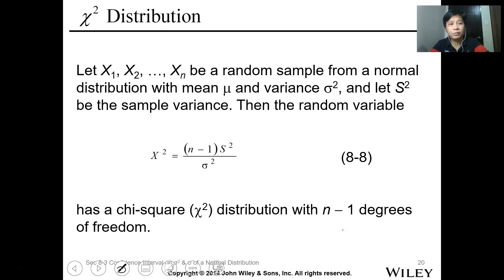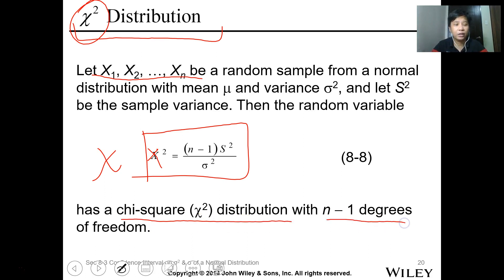Now the chi-square distribution. This could be utilized to estimate the variance or standard deviation of your population. Let x1 to xn be a random sample from a normal distribution with mean mu and variance sigma squared. Let s squared be the sample variance. Then the random variable, we can estimate or determine the chi-square value. This is chi. We can estimate the chi-square, which equals n minus 1 s squared over sigma squared, where the chi-square distribution with n minus 1 degrees of freedom.